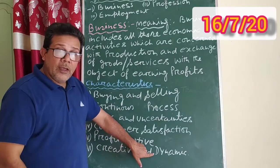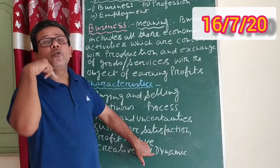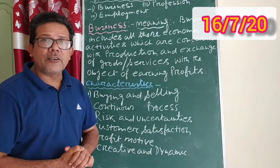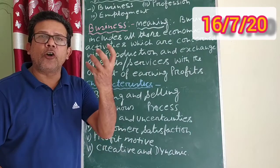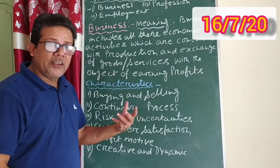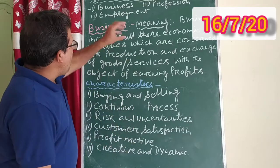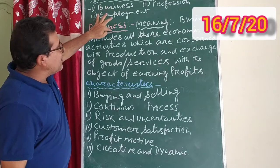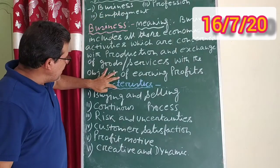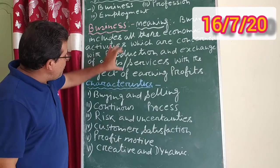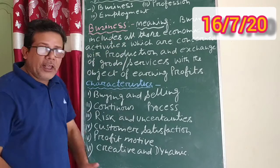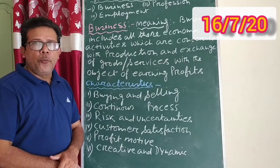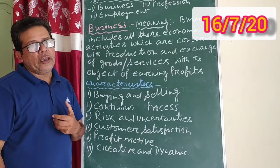In the same way, in business, when you are transferring ownership after receiving money, your way of dealing with each customer will be dynamic — it cannot be static. Today I discussed one of the economic activities called business, covering its meaning and characteristics. I hope I have made it very clear to you. Thank you so much.